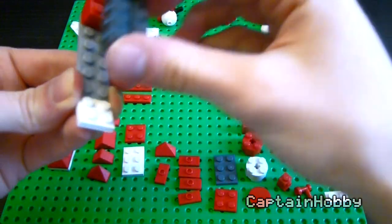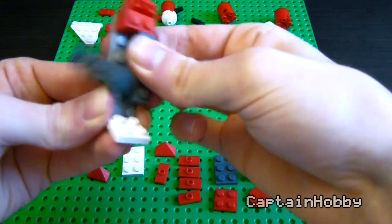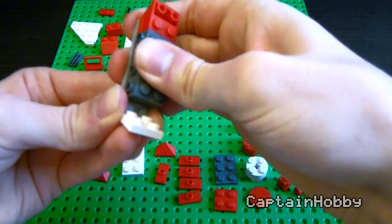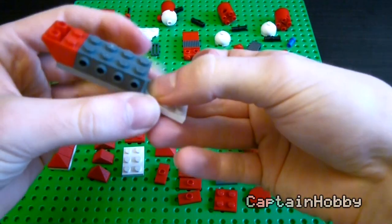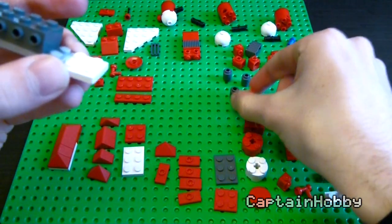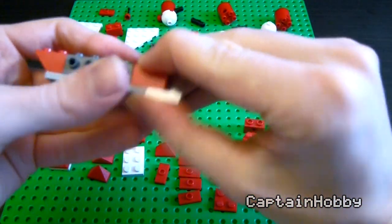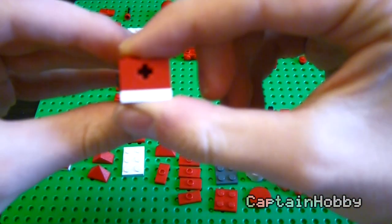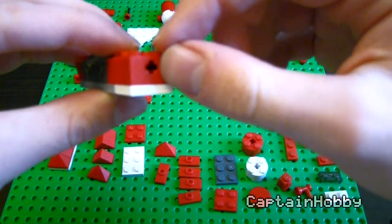In the back here we'll place a 2x2 inverted 45 degree slope. Here we'll place two of these 1x4 bricks with four studs on one side, and then in front of that we'll place a 2x2 red brick, and then a 1x2 Technic axle rod brick.